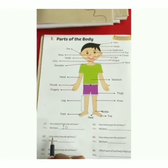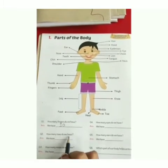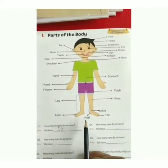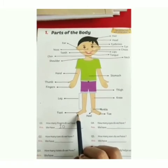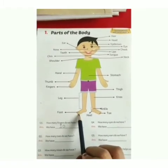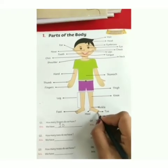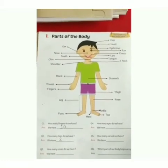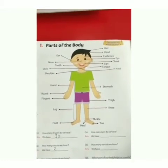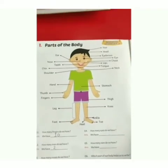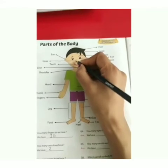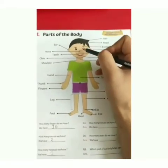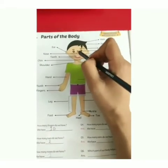The next question is: how many toes do we have? Do you know what toes are? Toes means the biggest finger in our foot. So this is our toe — one toe and second toe, so we have two toes. And the third question is: how many noses do we have? We have one nose. Next: how many eyes do we have? One, two — we have two eyes.